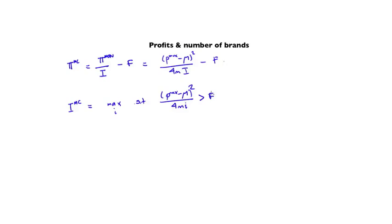The number of firms that get created is the maximum integer such that Pmax minus mu squared over 4MI is greater than F. Brands are going to keep entering as long as the profits are positive. Remember, for a firm that doesn't enter, they get zero profits in this model. Brands keep entering until that condition is violated, and that gives you the equilibrium number of brands.